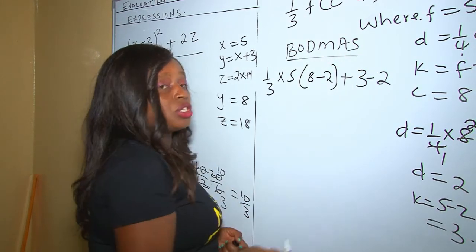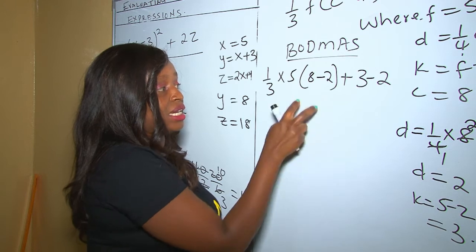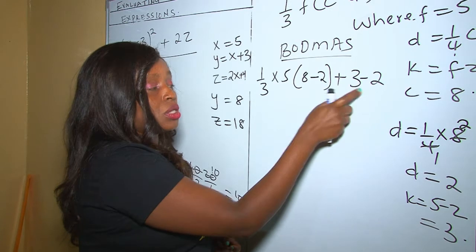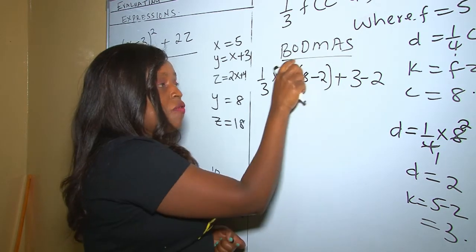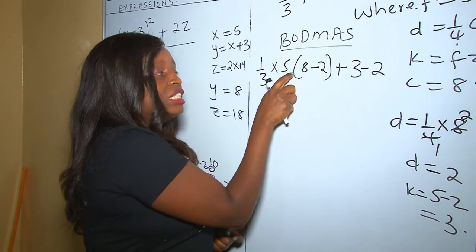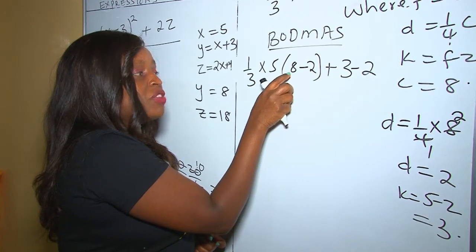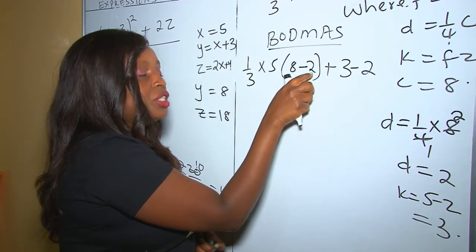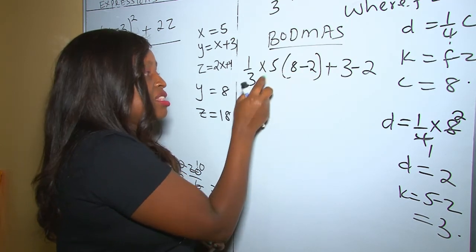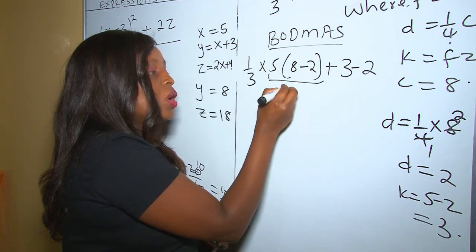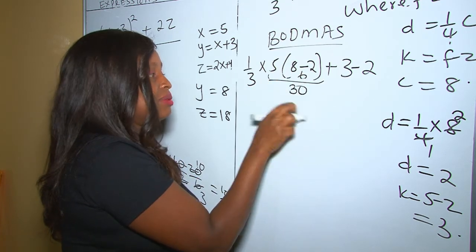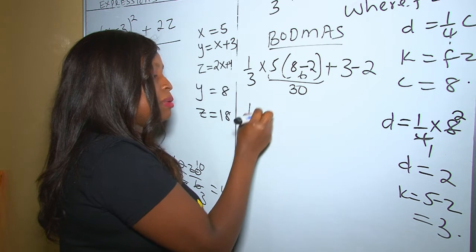Now when we reach here we follow BODMAS — the order of operation. There are different operations: brackets, multiplication, addition, and subtraction. To get the question right, follow the order: first deal with the brackets. Inside the bracket we have 8 take away 2, which is 6. Then 6 times 5 is 30. So we have removed the brackets, giving us one-third multiplied by 30.